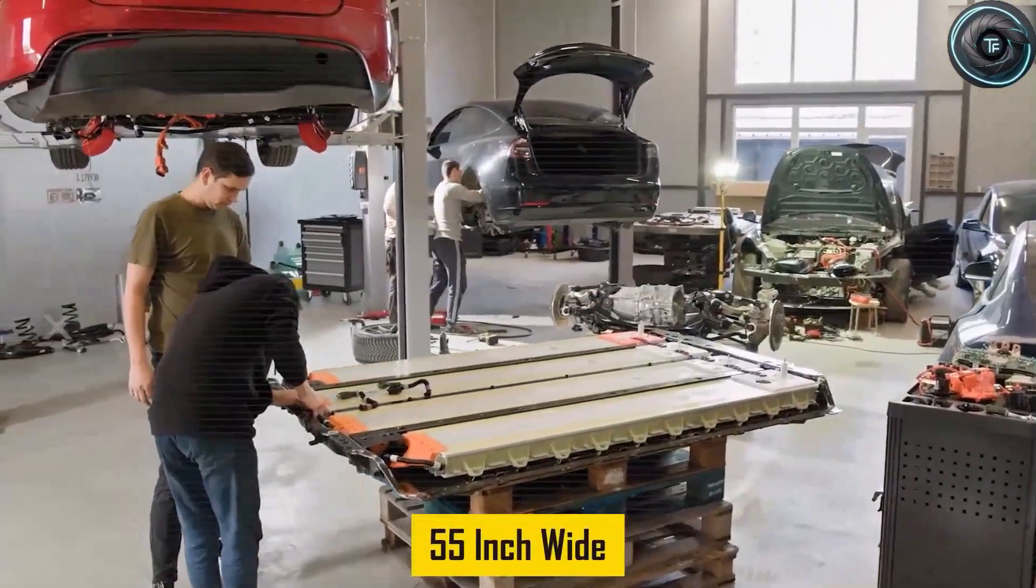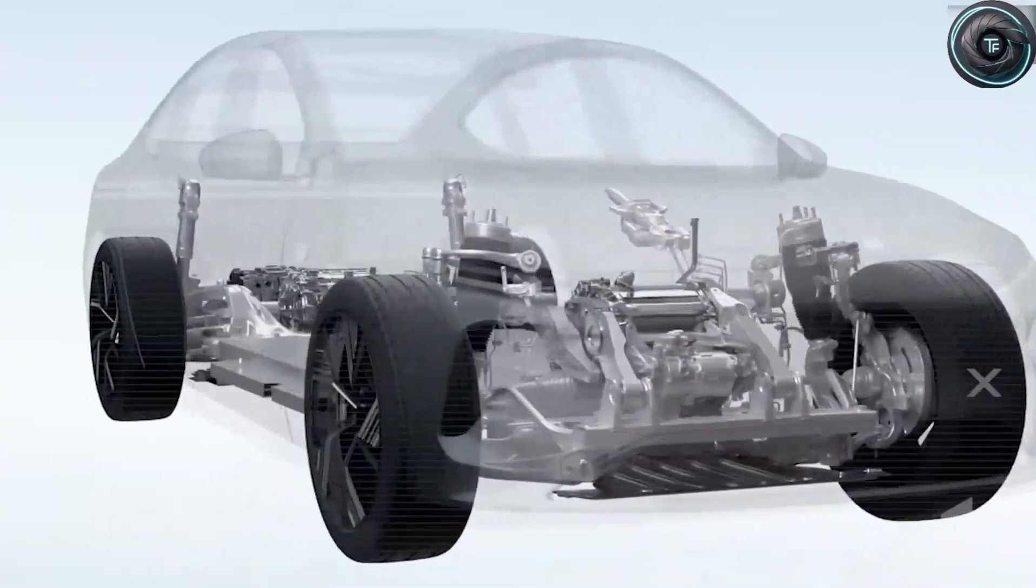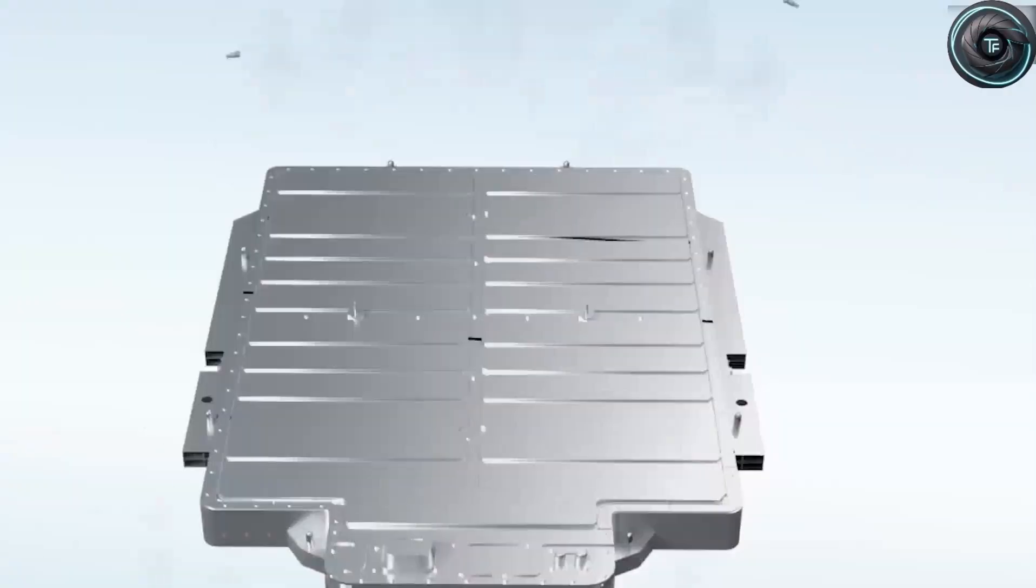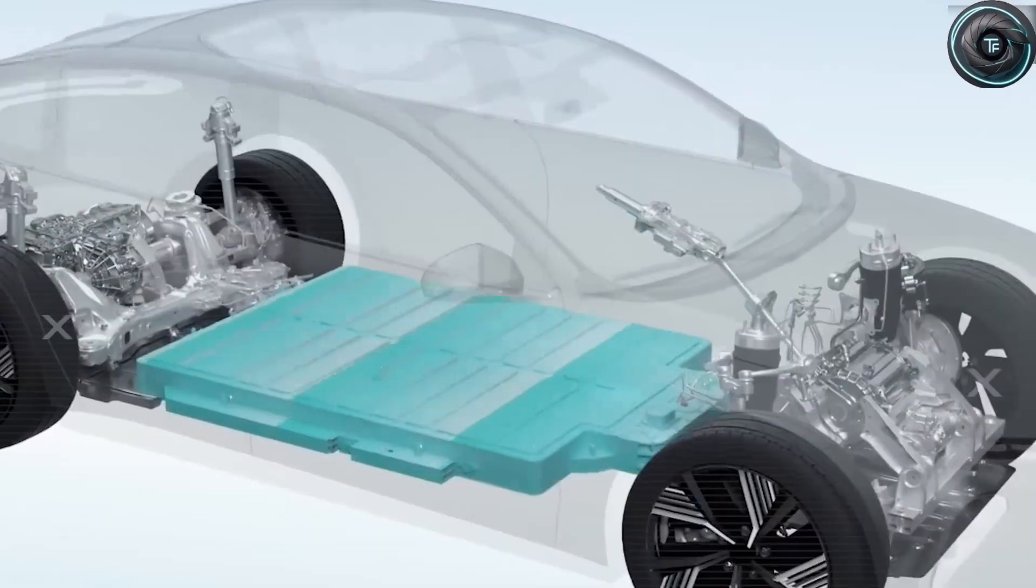The problem was, aluminum-ions move differently. They're bigger, heavier, harder to manage. Early attempts produced fast charging but terrible capacity. So for years, the technology sat in the shadows, until Tesla decided to rewrite the rules.